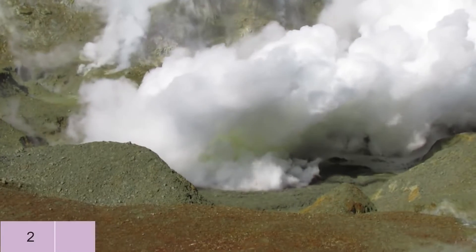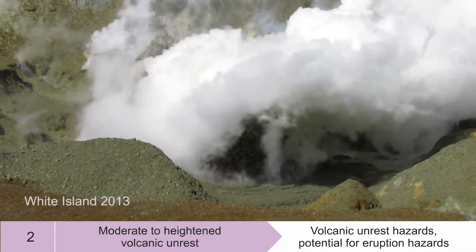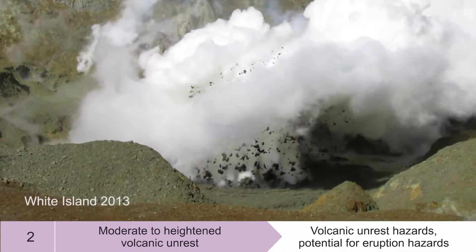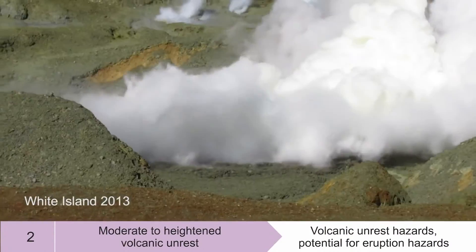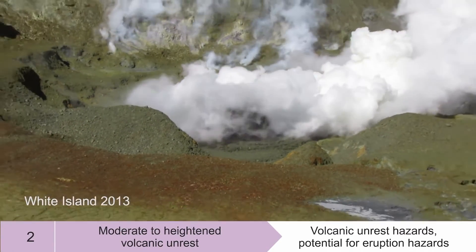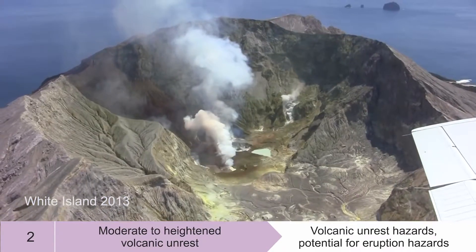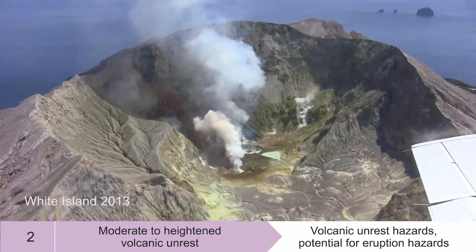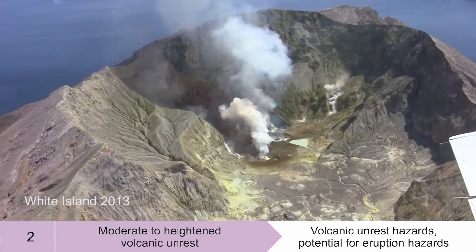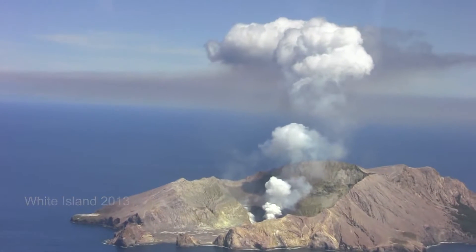A volcano at alert level two is experiencing moderate volcanic unrest. There will be some activity occurring on the volcano, it will be contained within the crater, and there will be volcanic unrest hazards and a potential for an eruption.